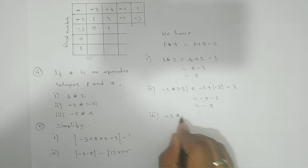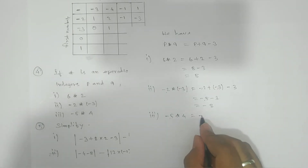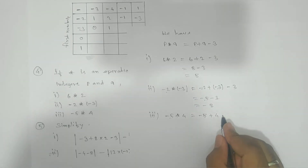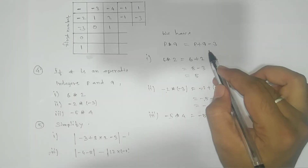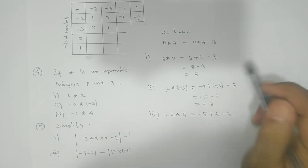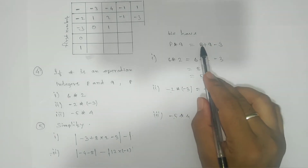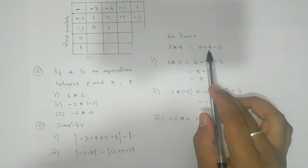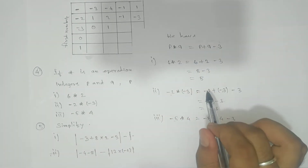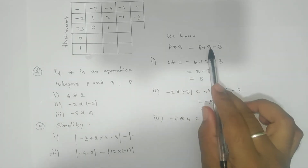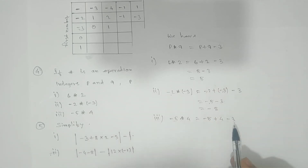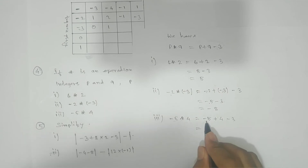Third: minus 5 ★ 4. Write minus 5 plus 4 minus 3. Note: they may give p into q instead of p plus q — then you write the multiplication. If they give p minus q, write minus instead. Whatever operation relation is given, proceed accordingly. Here minus 5 plus 4 gives minus 1, then minus 3 gives minus 4.